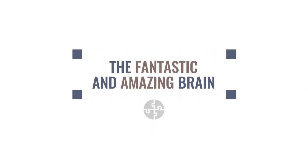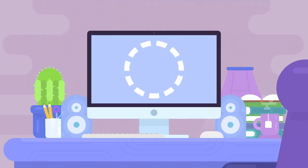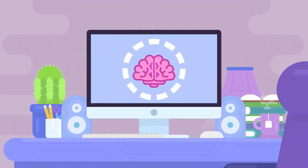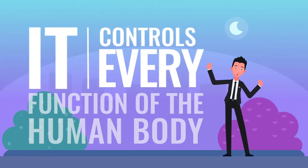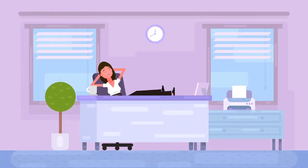The Fantastic and Amazing Brain. The human brain is our most complex organ. It controls every function of the human body while we're awake, and it's even more active while we're asleep.